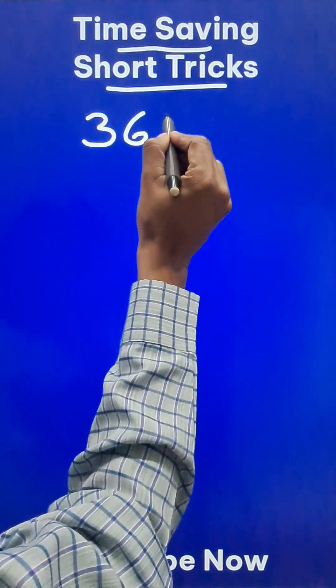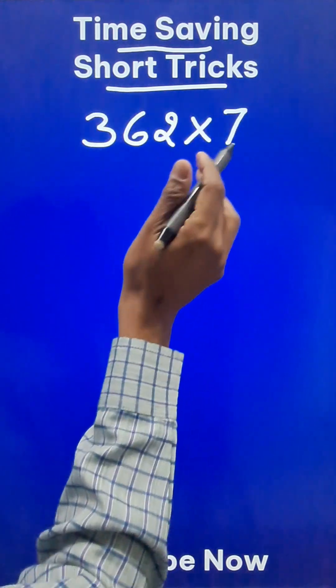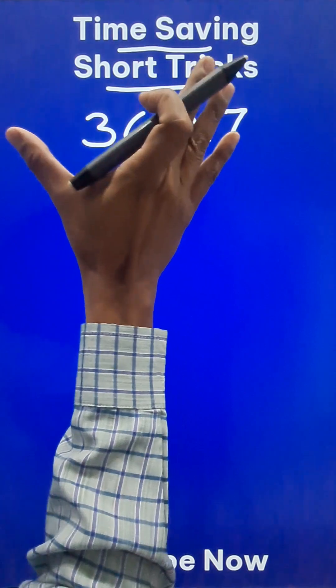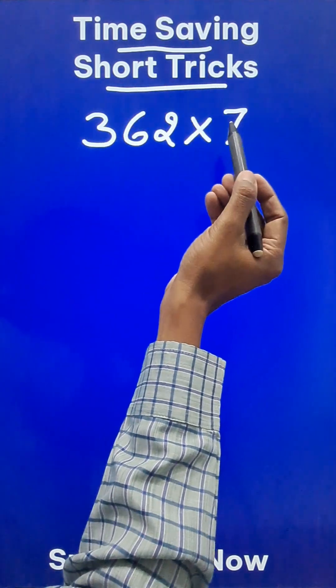Suppose you have to do 362 by 7. You know the 7 times table but you don't want to do the traditional method. So do the partial products.